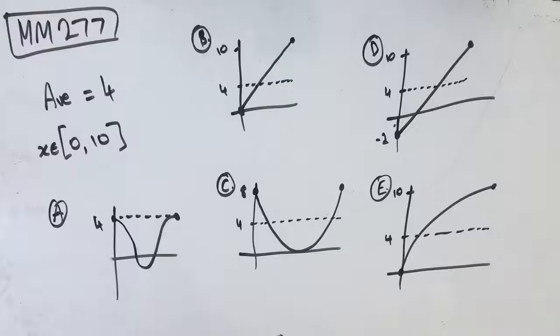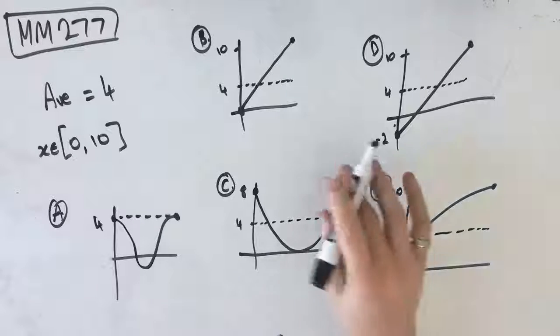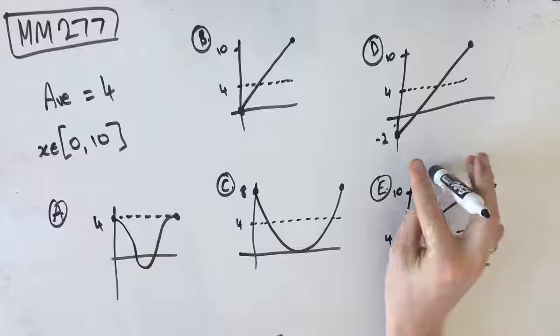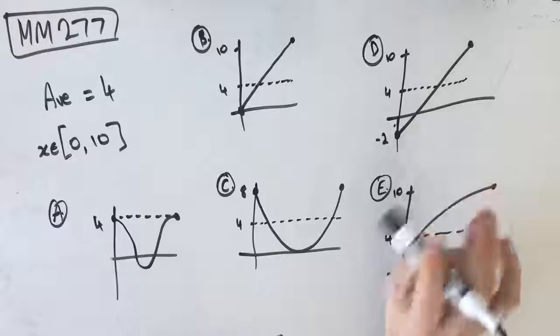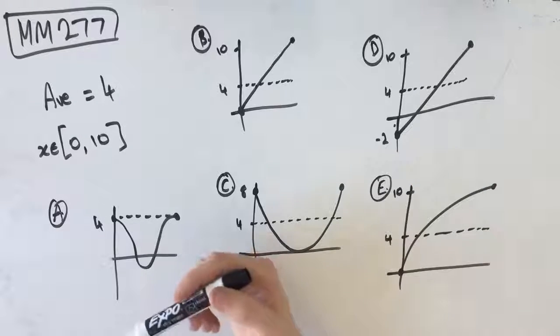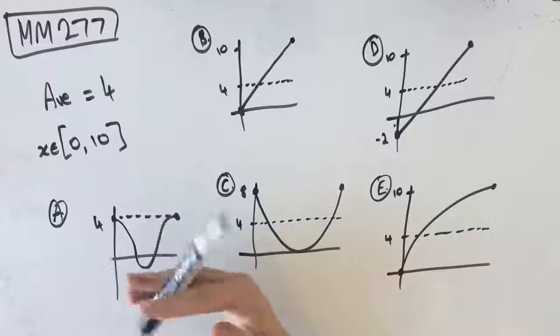Hey guys, welcome to question MM277 of the Maths Methods Fortify Study Guide. In this question, let f be a function with an average value of 4 over the interval 0 to 10. The graph of f over this interval could be.